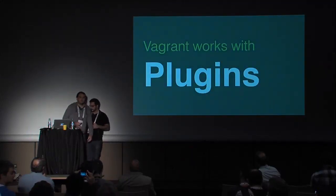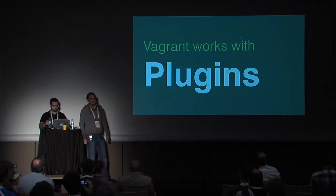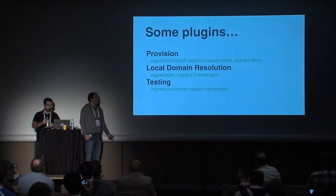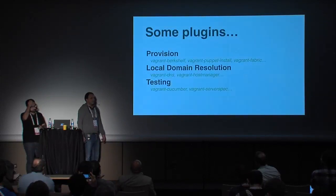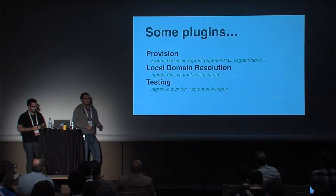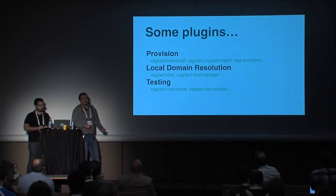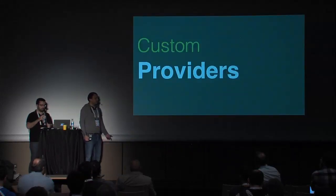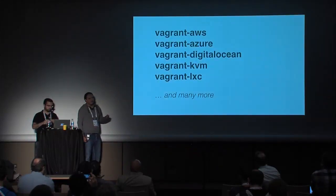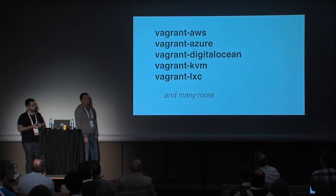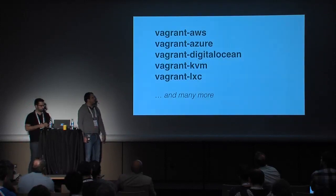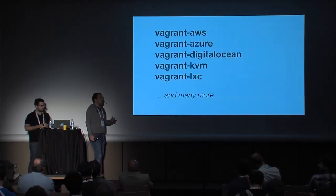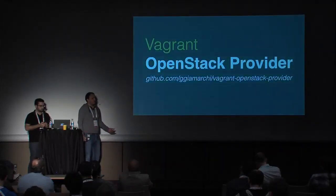Before talking about Vagrant and OpenStack together, a bit more about Vagrant itself. Vagrant's architecture is based on a plugin system, and most of Vagrant's built-in features are implemented as plugins. In the community, there are many plugins for provisioning instances, configuring host and guest machines, extending the Vagrant lifecycle, and extending the CLI. Providers are plugins as well. For instance, you can manage KVM virtual machines using the Vagrant KVM provider, manage Linux containers with the LXC provider, and there are plugins to interface Vagrant with cloud providers like Amazon Web Services. We are working on a provider for OpenStack.